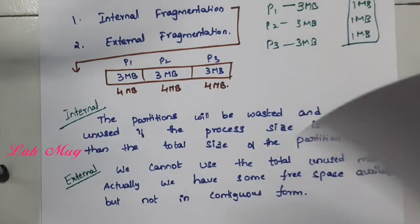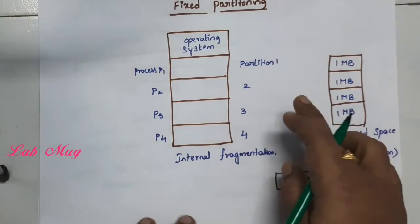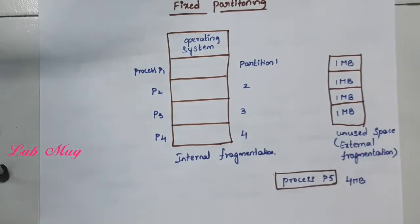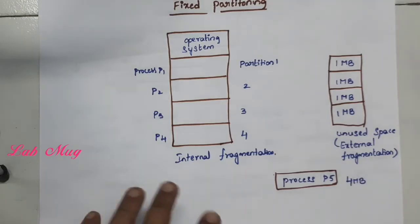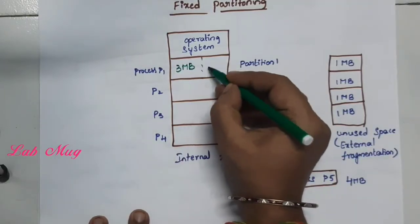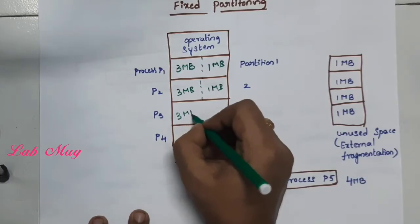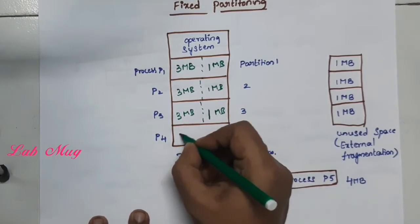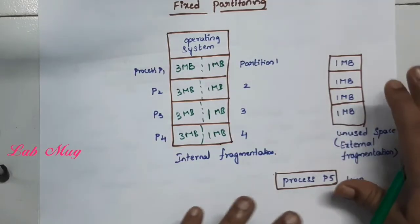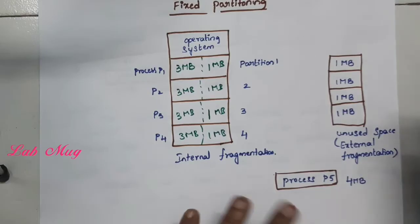Total, in fixed partition, a small diagram: here we have 4 processes, and for each process there is each partition. Process P1 has one partition, P2 has one partition — individual partitions. As we saw earlier, for each partition and each process, 3MB of memory is allocated. That 3MB is used and 1MB is free space. Again, 3MB is used and 1MB is free. This is internal fragmentation. For external fragmentation: again 3MB is used by the processor and 1MB is free as unused space outside. That is the external fragmentation.